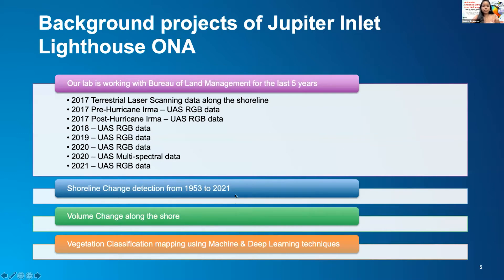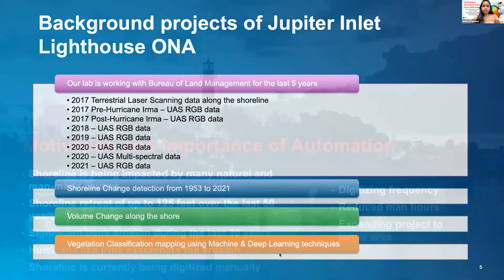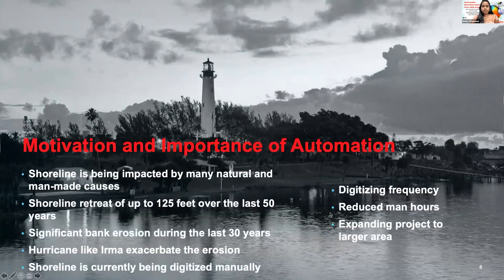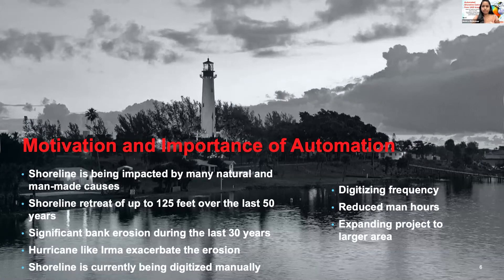We also perform land cover mapping using machine and deep learning techniques. Whenever we perform change analysis and compute the volume change, we usually digitize the shoreline manually, which is going to take more man-hours. That is where we have been motivated to automate the shoreline extraction process.